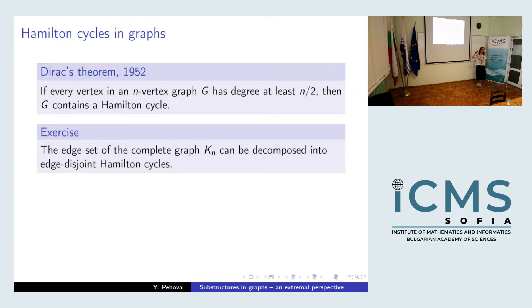In terms of finding dense collections, it's an undergraduate exercise to show that the edge set of the complete graph can in fact be completely decomposed into edge-disjoint Hamilton cycles. You just need to split the edges — this is it. I've actually seen an induction proof of that as well.